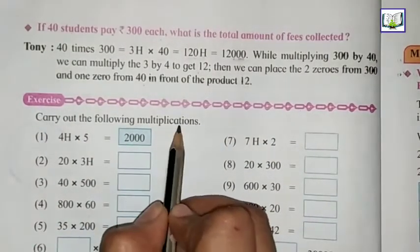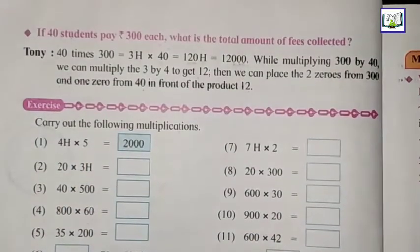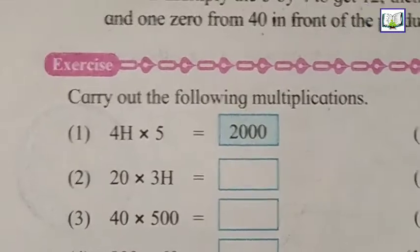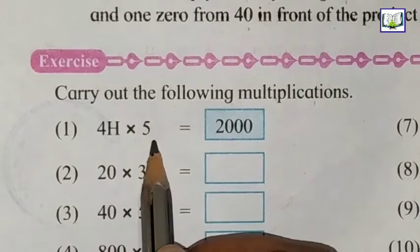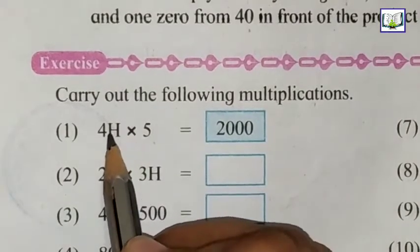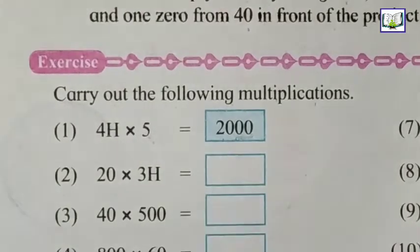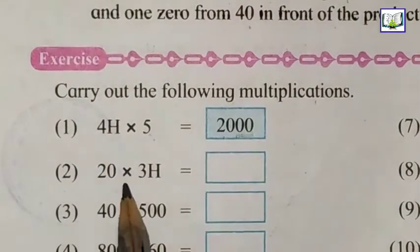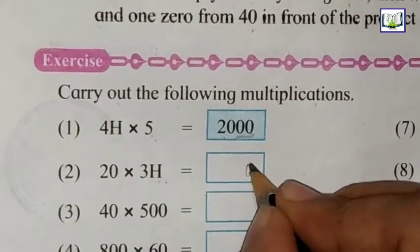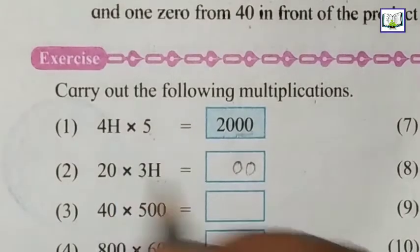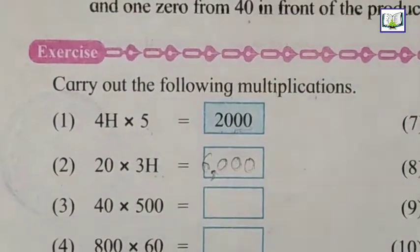Let's solve this exercise: carry out the following multiplication. Here is 4H into 5. 4H into 5, so 100 means 2 zeros, write those first. 4 fives are 20. The answer is 2000. Again, here is 300. 100 means 2 zeros: 1, 2. 3 twos are 6. Answer is 6000.